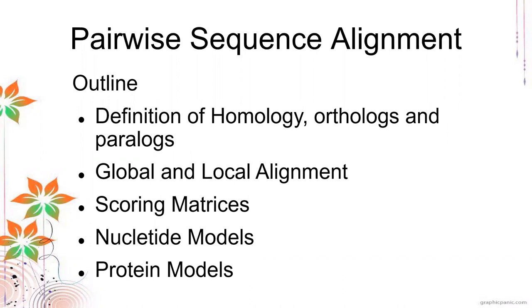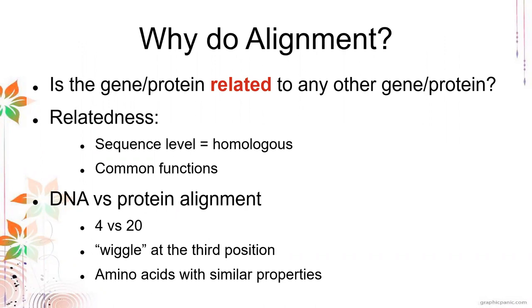First off, why do we need to do alignments? Alignment is used to answer the question: is your gene or protein related to any other gene or protein? When we talk about relatedness, we can look at how related sequences are on the sequence level — basically how similar the sequences are — and because of this relatedness, they might have similar functions.